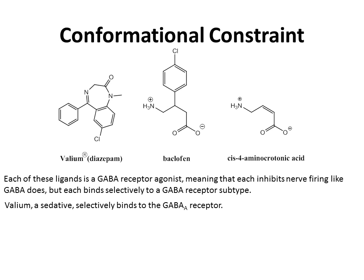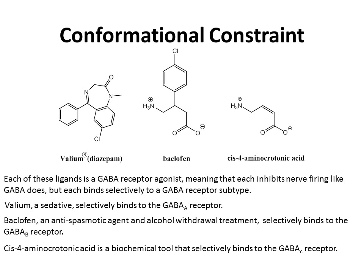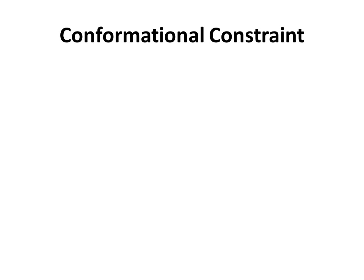Valium, a sedative, selectively binds to the GABA-A receptor. Baclofen, an antispasmodic agent used in alcohol withdrawal treatment, selectively binds to the GABA-B receptor. And finally, cis-4-amino crotonic acid is a biochemical tool that selectively binds to the GABA-C receptor. Unlike the GABA-A and GABA-B receptor subtypes, the GABA-C receptor subtype is not very well understood, so its physiological role is not well defined.